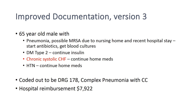But you can do even better. You could change 'CHF' to 'chronic systolic CHF' to reflect the actual problem with the patient, and this would be coded as DRG-178, complex pneumonia with a CC. The hospital reimbursement is nearly $8,000, which is more likely to cover the actual cost of delivering health care for this patient.